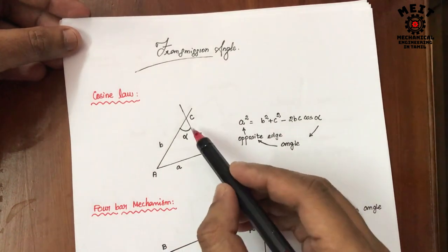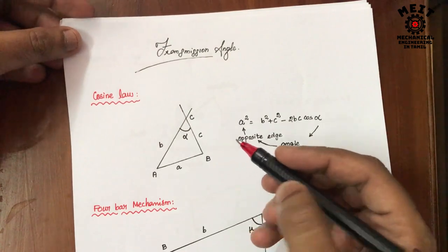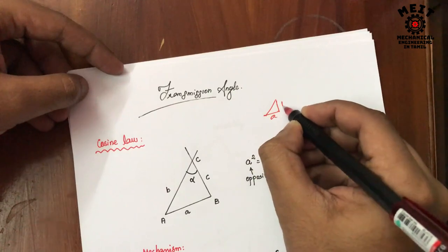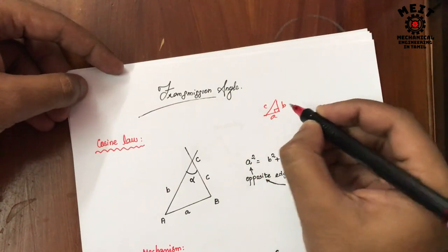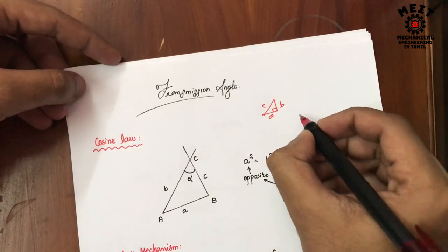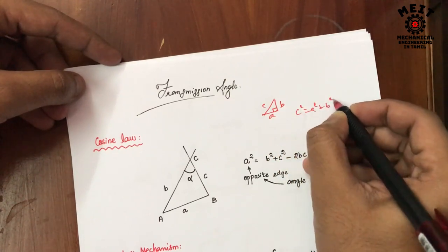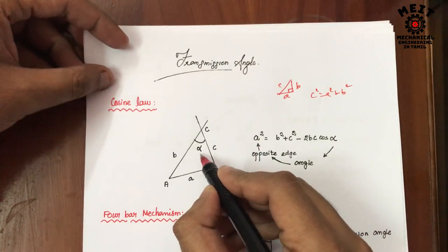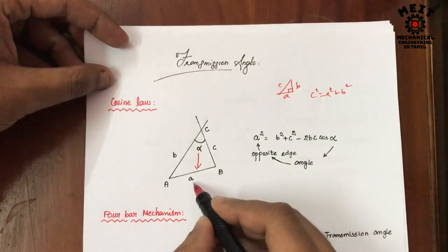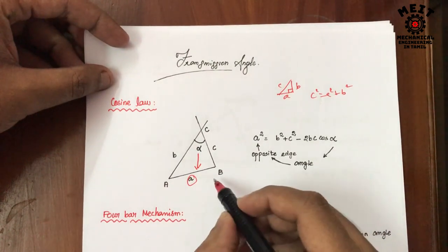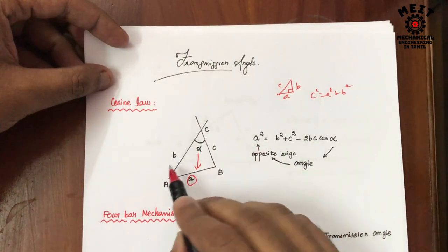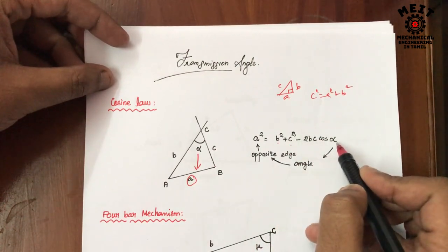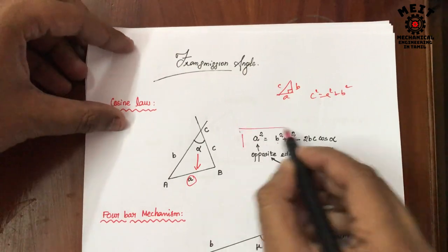Cosine law is a formula for a triangle which is not a right angle triangle. For a right angle triangle we use the Pythagorean theorem: c squared equals a squared plus b squared. But for a normal triangle, consider an angle alpha and the edge opposite to that angle is a. The formula is: a squared equals the summation of squares of the remaining two sides, b squared plus c squared, minus 2bc cos alpha.